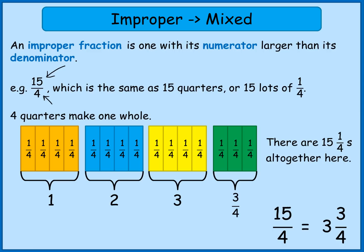This representation is what's known as a mixed number. I've got a whole number amount — 3 whole ones — and then a fraction amount, a proper fraction this time, with the numerator smaller than the denominator, of 3 quarters.